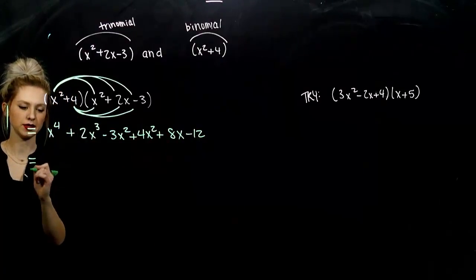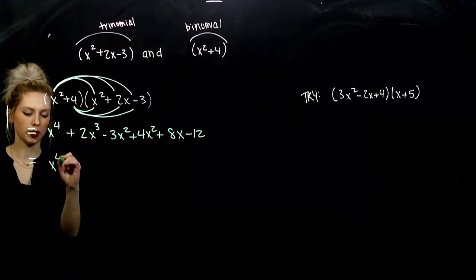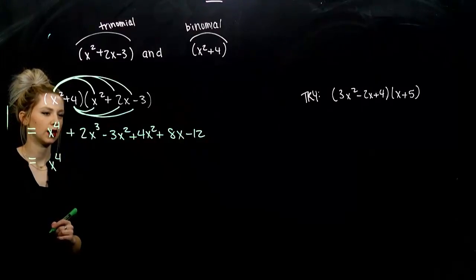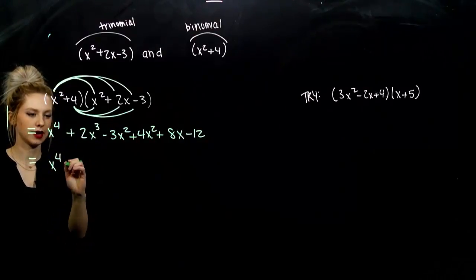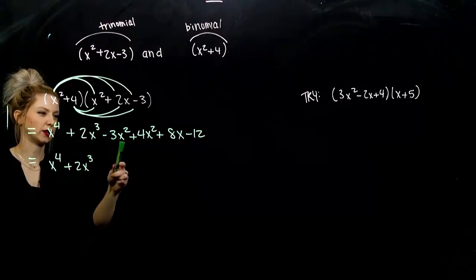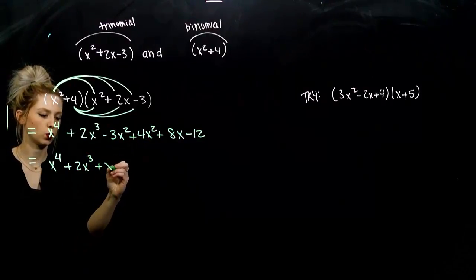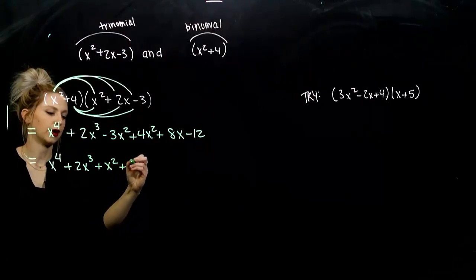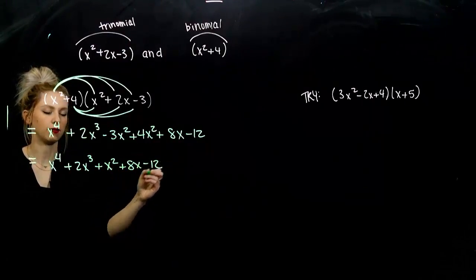So, now we want to write these in descending order. To the fourth power comes first. How many x cubes do we have? Just two of them. How many x squareds? Now, I've got 4. Take away 3. I'll be left with 1. And, I've got 8x and negative 12 on the back.